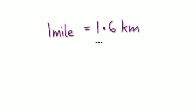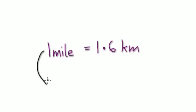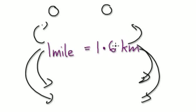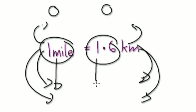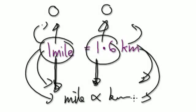Let's have a look at this example here. One mile equals 1.6 kilometers. When you double this, you also double this. When you triple this, you also triple this. When you half this, you also half this. When you have zero miles, you also have zero kilometers. You can see that it has that kind of relationship where you increase one, you also increase the other. So you can say that miles are directly proportional to kilometers.